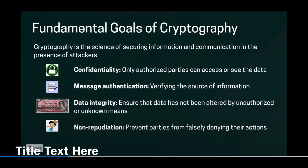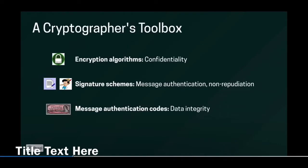Therefore, in cryptography, we try to achieve some fundamental goals. Four of those goals are confidentiality, message authentication, data integrity, and non-repudiation. Confidentiality means that only authorized parties can access or see the data. Message authentication helps verifying the source of information. In data integrity, we try to ensure that data has not been altered by unauthorized or by unknown means. In the worst case, if the data has ever been changed, we want to make sure that we are able to detect those changes. In non-repudiation, we try to prevent parties from falsely denying their actions. For confidentiality, we use encryption algorithms. For message authentication and non-repudiation, we use signature schemes. For data integrity, we use message authentication codes.